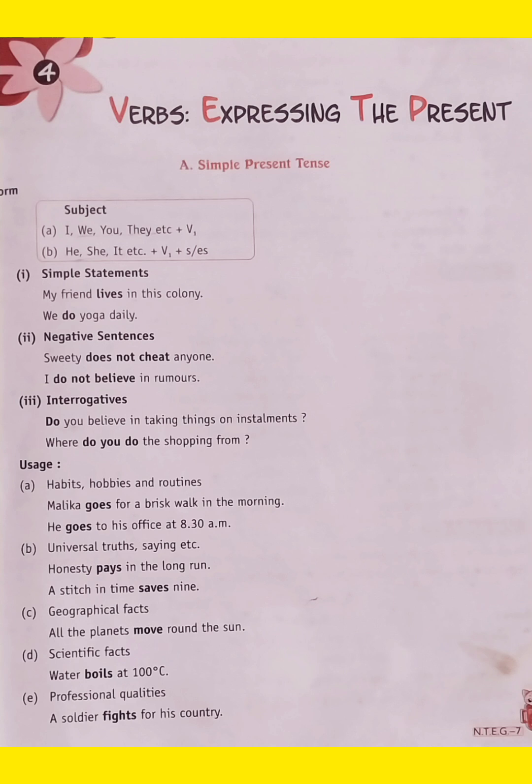Here, the examples make it clear. My friend lives in this colony. Here in the sentence, friend is singular and we use singular verb with it. We do yoga daily. In this sentence, the subject is plural and it takes only plural verb.